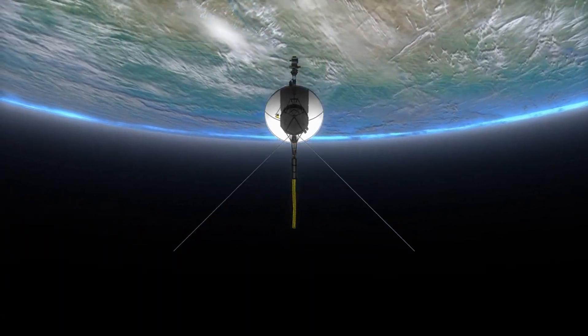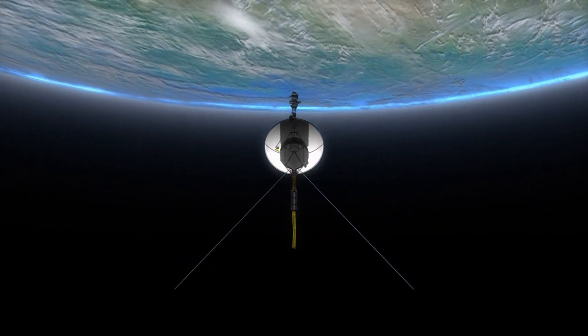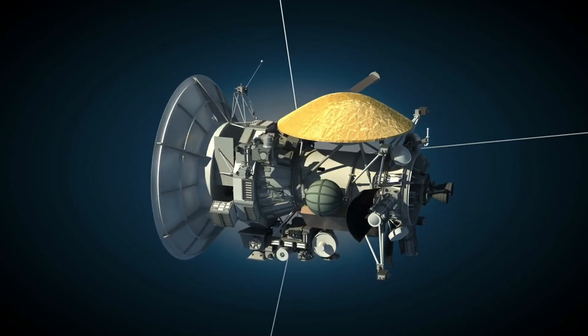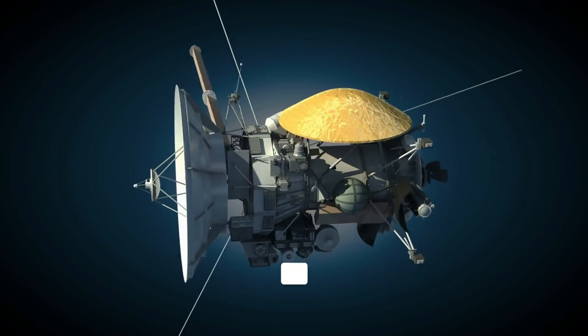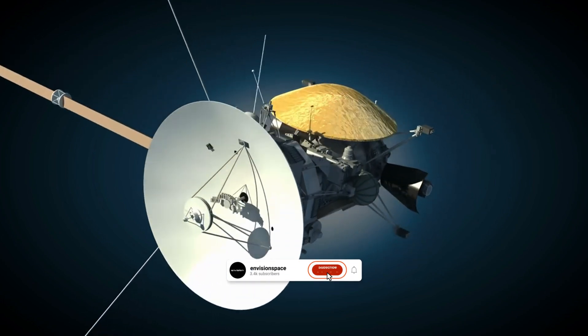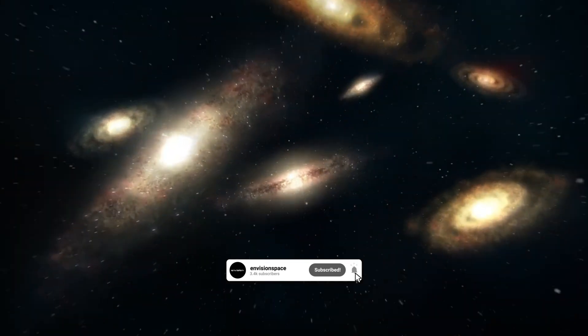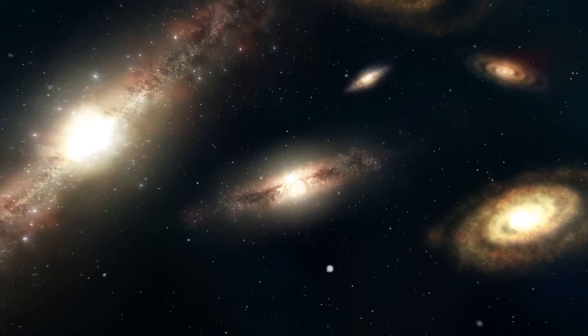The Voyager spacecraft, just like computers on Earth, uses the binary system to communicate with us. It employs only two numbers, 0 and 1, representing all kinds of information.